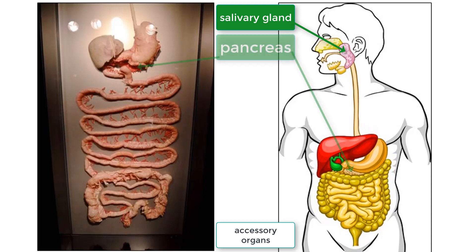Next is the pancreas, which is an extremely important organ. Located just below the stomach, the pancreas produces many different enzymes that are released into the small intestine. These enzymes are critical in breaking down molecules and balancing your body. More on these enzymes later.